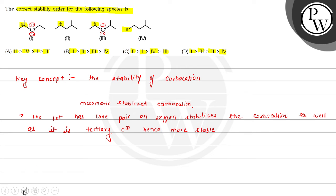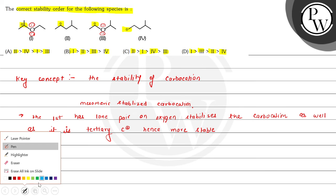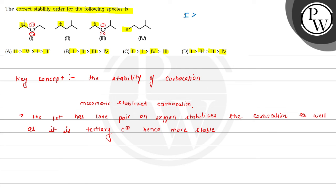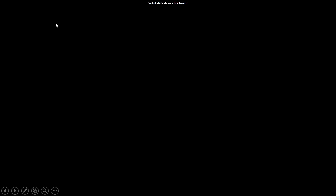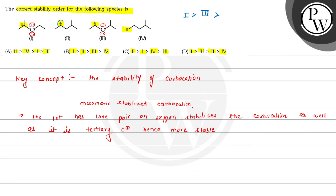So here, species 1 is the most stable. Third is also a mesomeric stabilized carbocation, so third comes after first. Now checking species 2 and 4: species 2 is a secondary carbocation and species 4 is a primary carbocation. So secondary carbocation is greater than primary carbocation, meaning 2nd is greater than 4th. This order is given in option 4, so option D is the correct choice for this question.